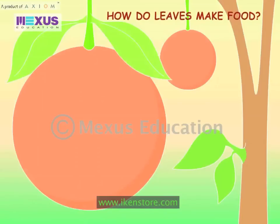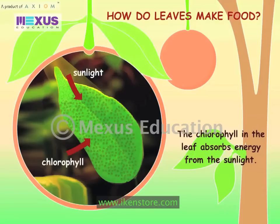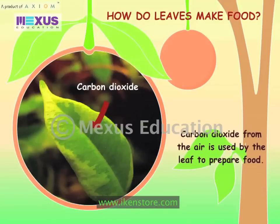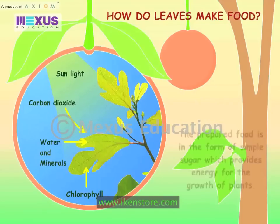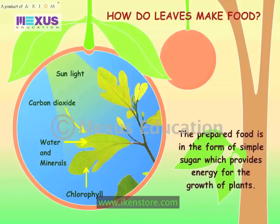How do leaves make food? The chlorophyll in the leaf absorbs energy from sunlight. Carbon dioxide from the air is used by the leaf to prepare food. In the presence of sunlight and chlorophyll, the leaf uses carbon dioxide, water and minerals to prepare food.